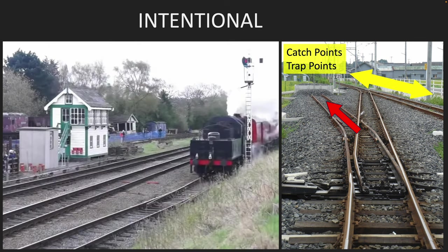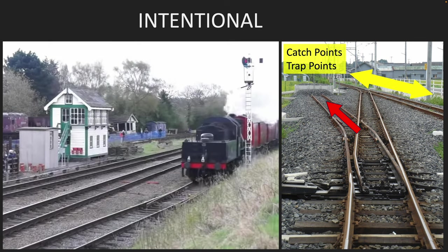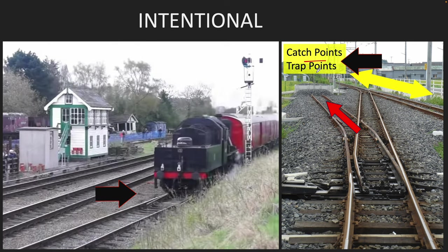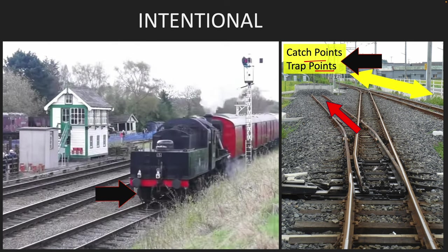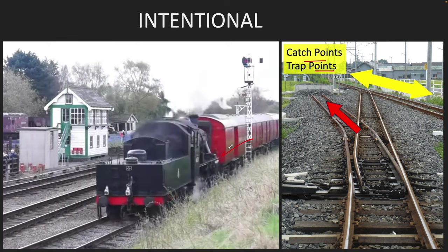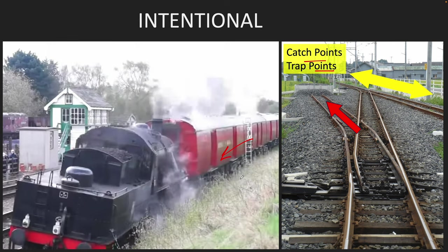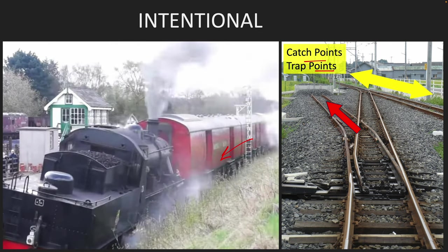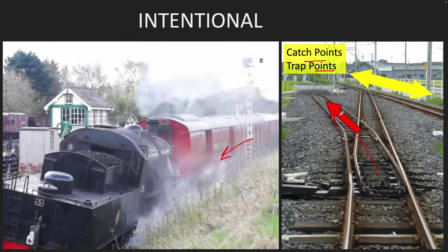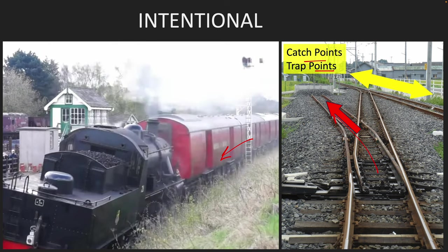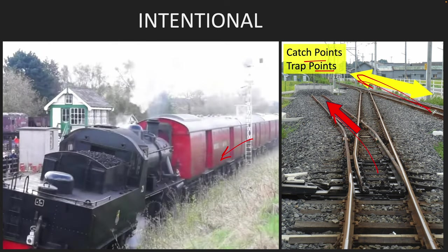There's one more very interesting reason why trains derail and that is intentional. We have something called catch points or trap points on the rail. Basically, if a train starts rolling or has a brake failure or starts doing unauthorized movement, these catch points are set such that passenger movement or mainline movement is protected.